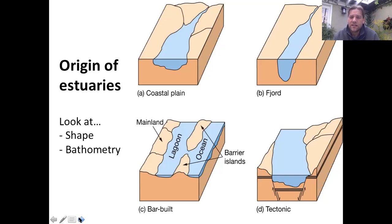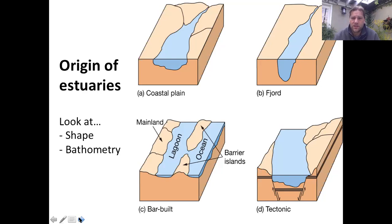And then finally, the idea of tectonic. We're going to be looking at two aspects: one is the overall shape, which can really help in determining what type of estuary you have, and second, we're going to look at the ocean floor, or the bathymetry, of those particular estuaries. All right, so let's go through and talk about them.